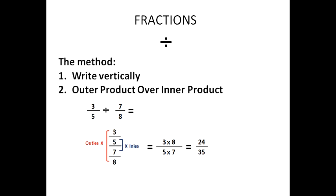Now to divide fractions. The first step is to write the problem vertically, then do the outer product over the inner product — most people call this outies over inies. For three-fifths divided by seven-eighths, write it vertically: three over five divided by seven over eight. We form outies: three times eight on top. We form inies: five times seven on the bottom. Nothing cancels, so our final answer is twenty-four over thirty-five. Since twenty-four over thirty-five is a proper fraction, we are done. If it had been improper, we would convert to a mixed number.